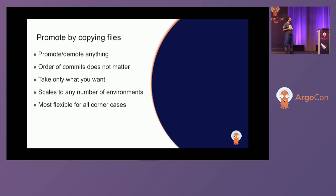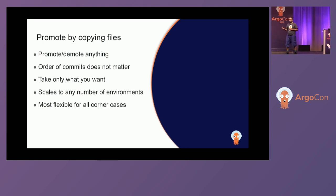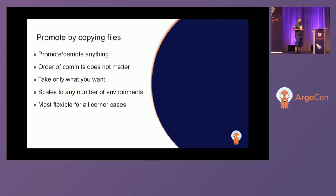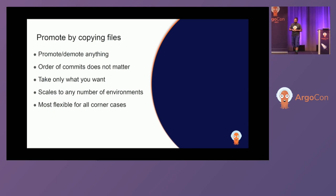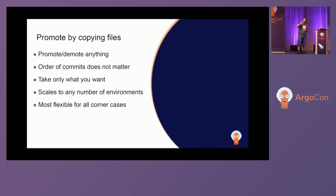With folders on a single branch, things become really simple — you just copy files around and select exactly what you want to promote. For example, with Helm you can have multiple value files: one for the container image, one for settings you want to promote, one for settings you don't. During promotion you decide what to copy. The order of commits doesn't matter anymore. If you have 5, 20, or even 50 environments, you still have one branch — complexity stays constant.